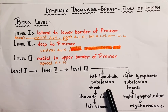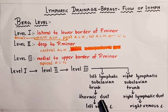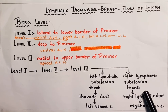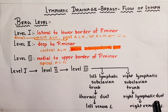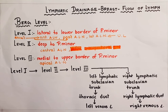From the left lymphatic subclavian trunk, the lymph is then drained into the thoracic duct on the left side, and from the right lymphatic subclavian trunk the lymph is drained into the right lymphatic duct on the right side. From the thoracic duct and the right lymphatic duct, the lymph is ultimately drained into the left and right venous angle respectively. The venous angle is the junction of the internal jugular vein and the subclavian vein.